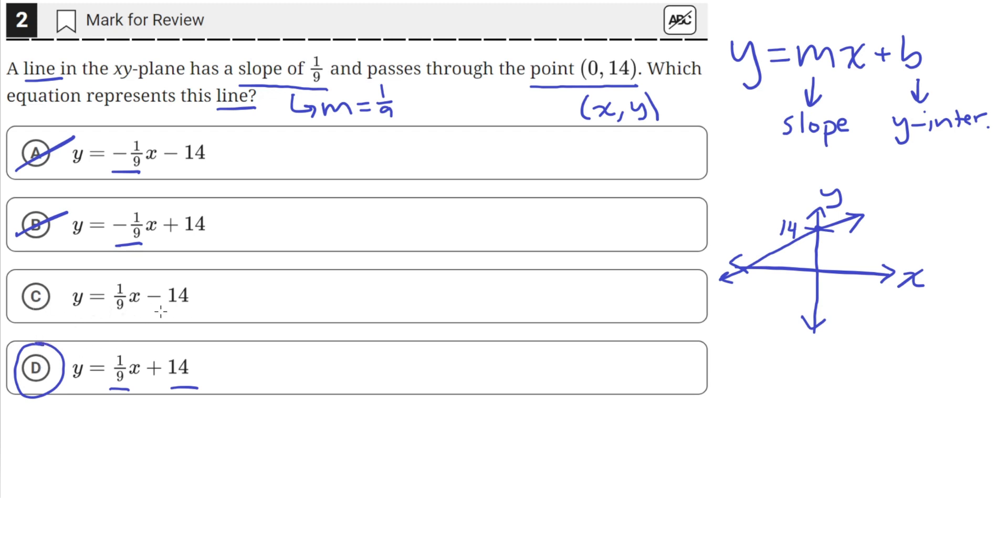Answer choice C is wrong because it says that the y-intercept is negative 14, which is incorrect, since it passes through the point (0, 14), not (0, -14). So D is the correct answer.